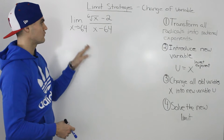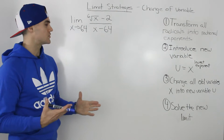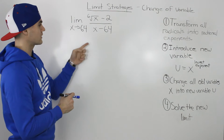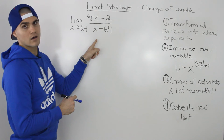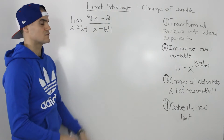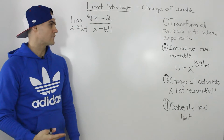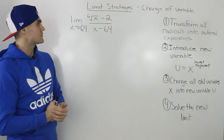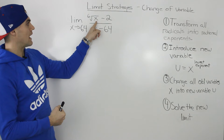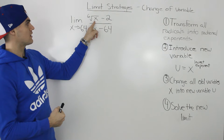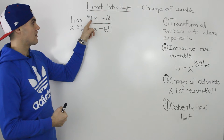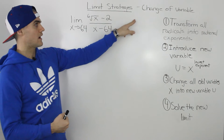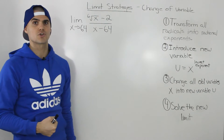With this particular limit, the first thing we check is: can we make a direct substitution? If we sub in 64 for x, we get a denominator of 0 — 64 minus 64 is 0. So we need a different strategy. The sixth root of x tells us we're dealing with an ugly radical, which means we'll use the change of variable strategy.